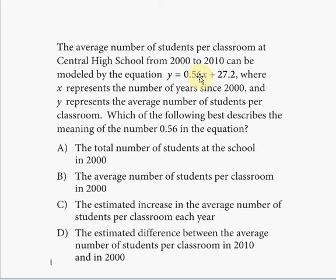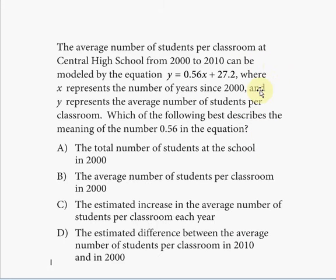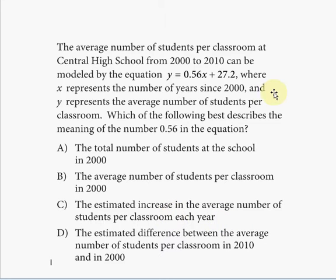For example, if x moves two units to the right, y moves 2 × 0.56 units up — and that relationship stays the same whether you go from two to four units or four to six units. For every fixed increment of x, you get the same increment for y. This is because the slope is constant — it never changes. In this case, 0.56 is the slope of the linear equation.